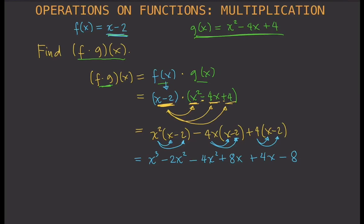I only have one x³ term, so that's x³. I have two x² terms, so that's -2 - 4, which is -6x². Then I have 8x + 4x, that's 12x, and then -8. That is your final answer. That's how you multiply two functions.